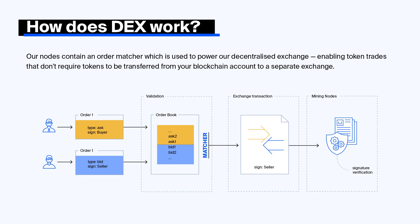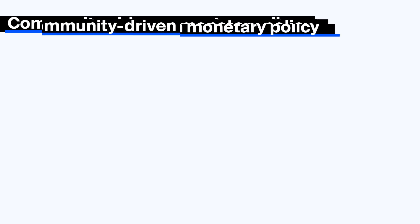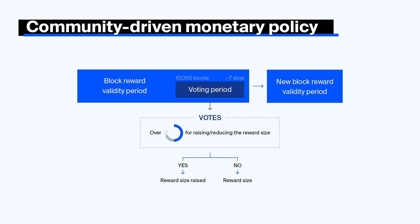The mining reward is a blockchain feature in which miners receive a fixed fee in WAVES tokens for each generated block. WAVES monetary policy is community-driven, meaning that WAVES nodes are able to change the rewards distributed with every generated block. Every 100,000 blocks, or approximately every 70 days, a new vote for a change to the current reward size begins among miners.